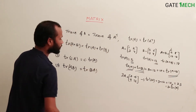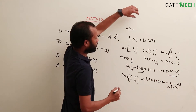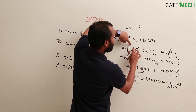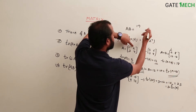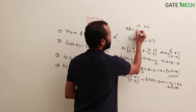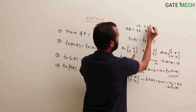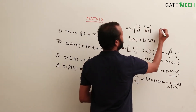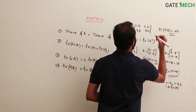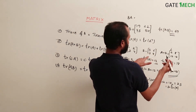Similarly, trace of AB is always equal to trace of BA. Let us verify: A times B — computing element by element: (1×5 + 2×7) = 19, (1×6 + 2×8) = 22, (3×5 + 4×7) = 43, (3×6 + 4×8) = 50. Trace of AB is 19 plus 50 equals 69.